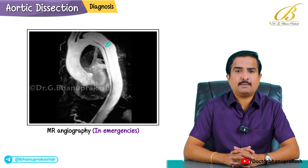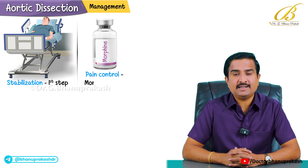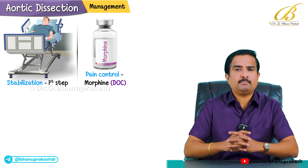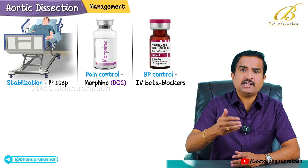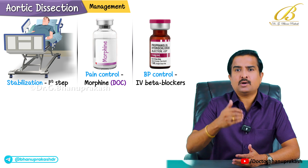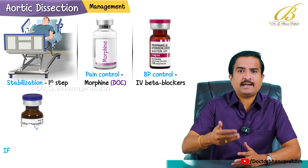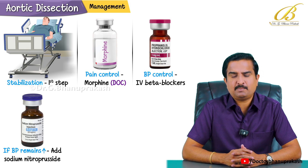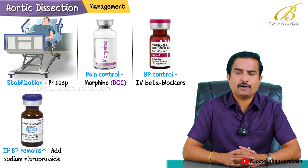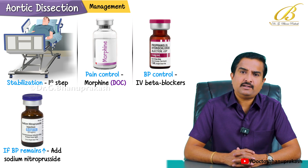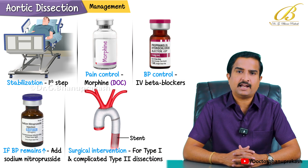For management, stabilization is the first step. Pain control is crucial — morphine is the drug of choice. Blood pressure control is equally important: use IV beta-blockers to bring systolic BP down to 100–120 mmHg. If BP remains elevated, add sodium nitroprusside. These patients need to be admitted to the ICU for close monitoring. Surgical intervention is required especially for Type 1 dissections and complicated Type 2 dissections.